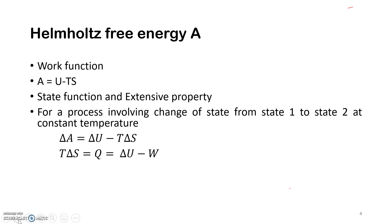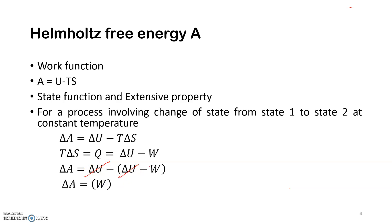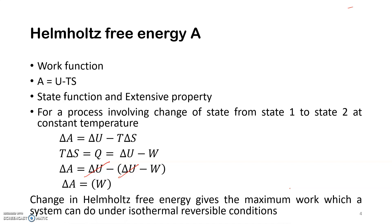From the first and second laws of thermodynamics, we have T delta S = delta U − W, where W is the work done by the system. Substituting the value of T delta S, delta A becomes delta U − (delta U − W). Canceling out delta U, what we are left with is delta A = W. W is the maximum work done by the system by the absorption of heat at constant temperature. From this, we can define Helmholtz free energy change as the maximum work which a system can do under isothermal reversible conditions.